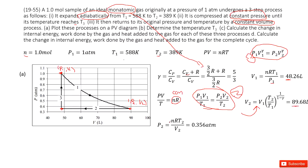You get the answer: V2 is around 90 liters. Then using PV equals nRT again, P2 equals nRT2 over V2, which gives P2 approximately 0.356 atm. Now you have this second point, and from the initial position to the second position this is the adiabatic process.